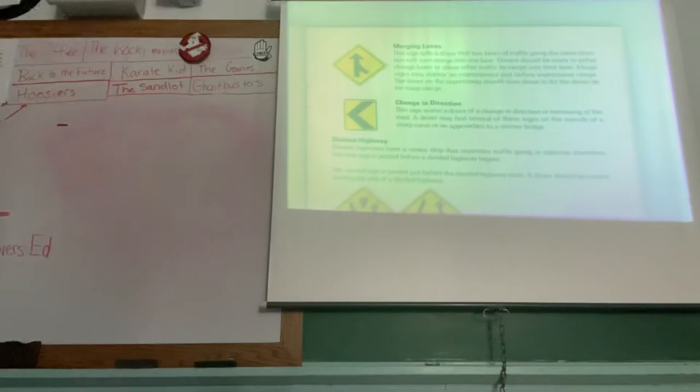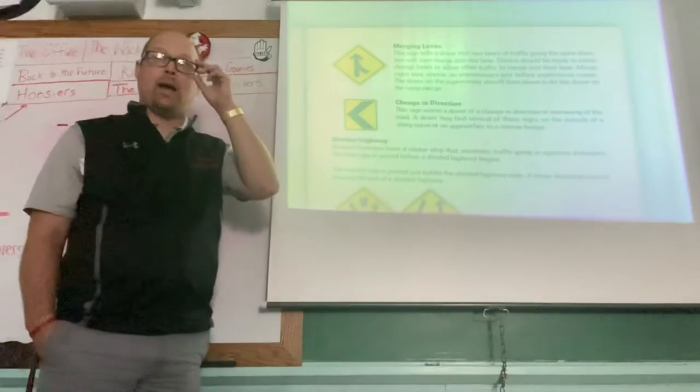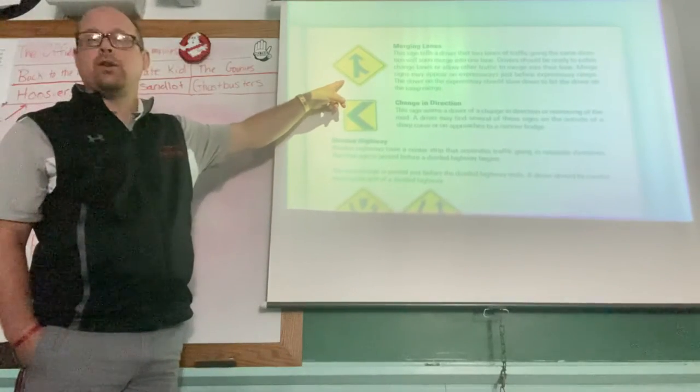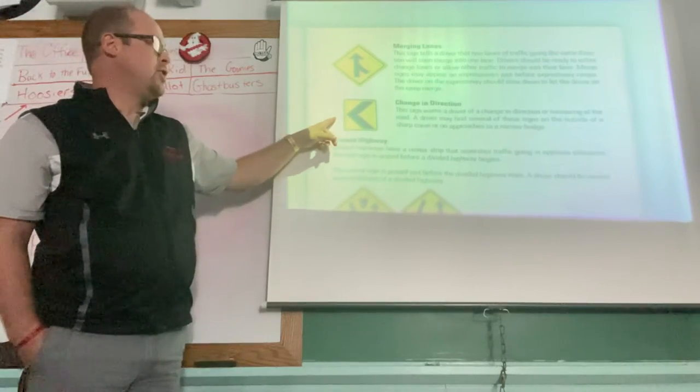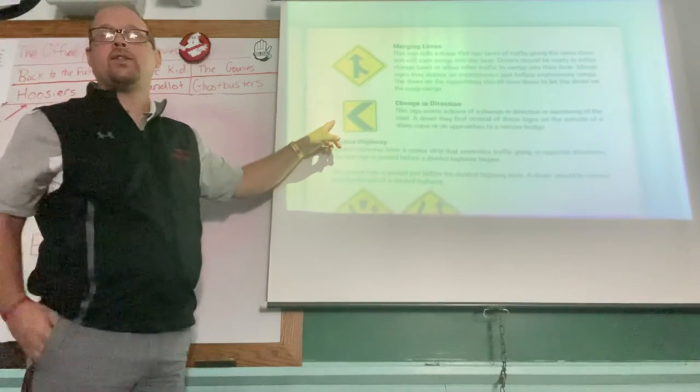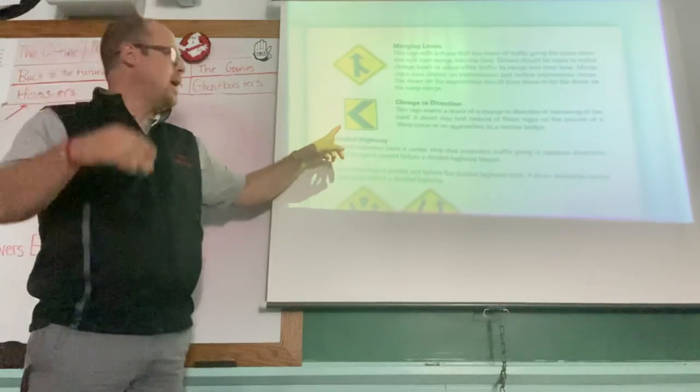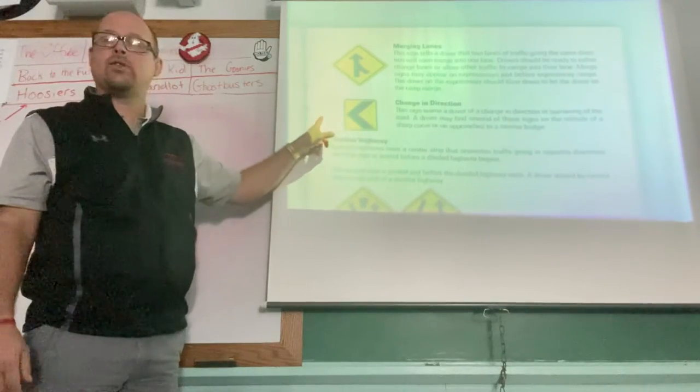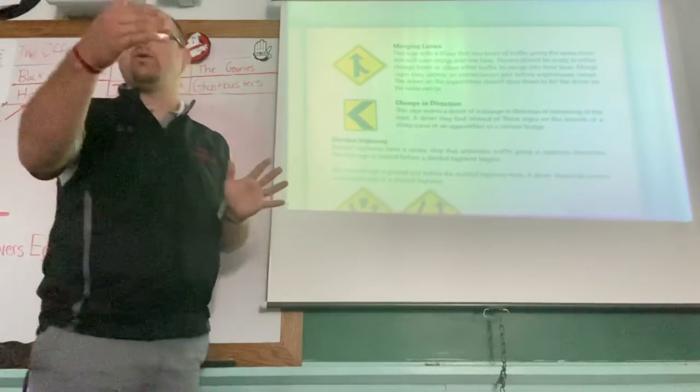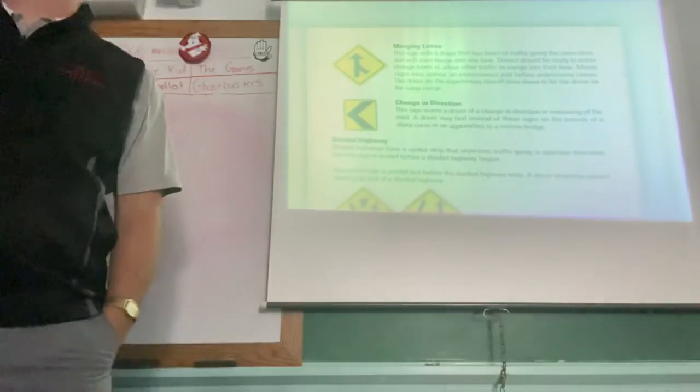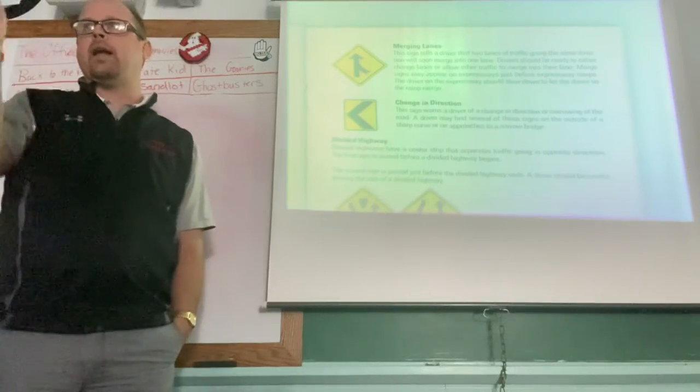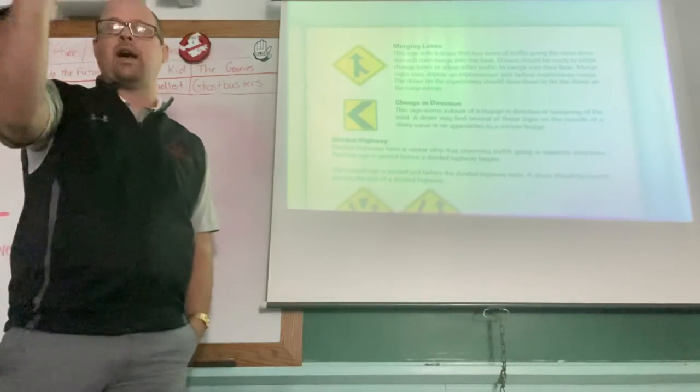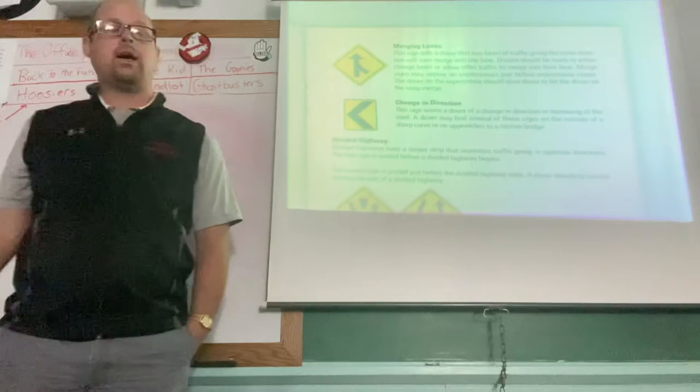The top of page 73 is where we're at now, merging lanes. This is when you're merging onto the interstate. Change in direction. You might see a curve sign and then you might see a bunch of these to help you with that curve and that change of direction. Best example is going from Pittsfield to Louisiana, and a couple of those curves have got the change in direction arrows.